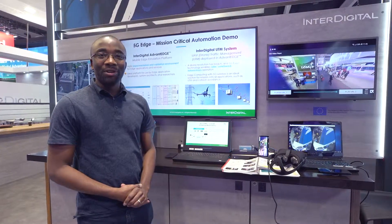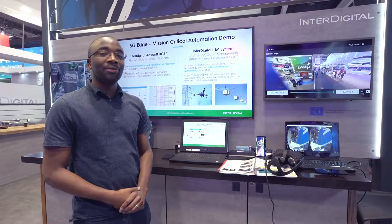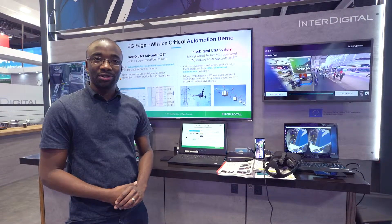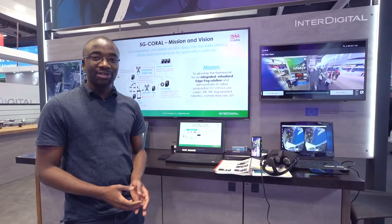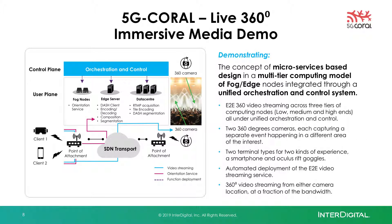In this demonstration we decompose the live 360 video streaming application into microservices that are deployed at the data center, edge, and fog node. The decomposition is based upon the compute requirements of each of these microservices. For example, at the data center we run the more compute-intensive tasks such as tile encoding and segmentation. At the edge server we run the less compute-intensive tasks such as dash client and segmentation.